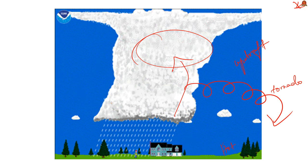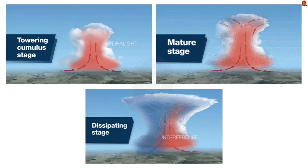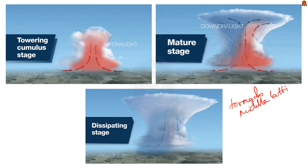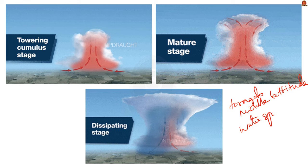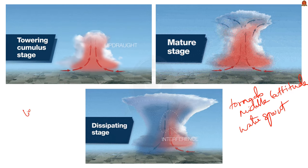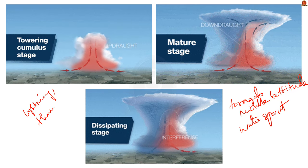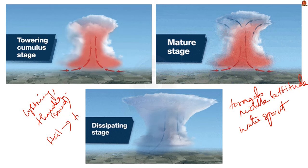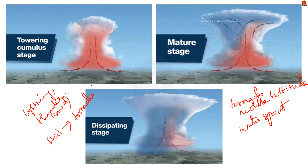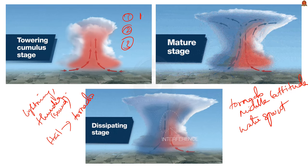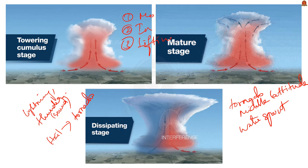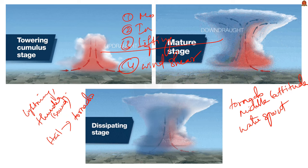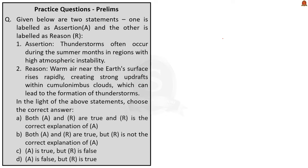During severe thunderstorms, spiraling wind descends like a trunk of an elephant with great force and very low pressure at the center, causing massive destruction — this phenomenon is called a tornado. Tornadoes generally occur in middle latitudes. When a tornado occurs over the sea, it is called a waterspout. The three ingredients required for a thunderstorm are moisture, instability, and lifting. If these are accompanied by wind shear — the fourth ingredient — there will be a severe thunderstorm leading to a tornado. The correct answer is Option A.